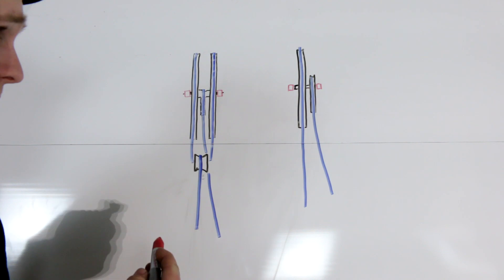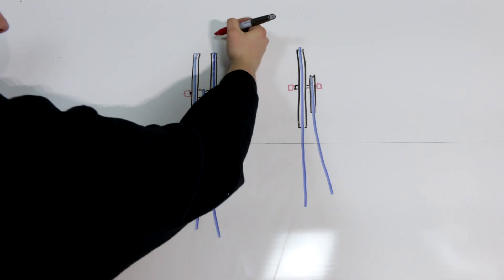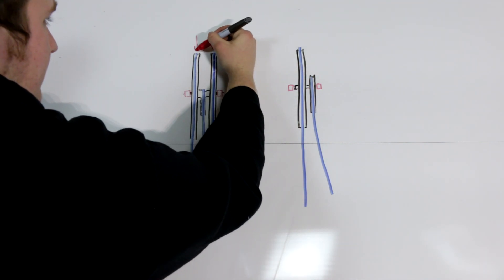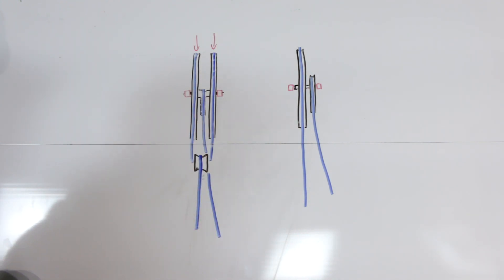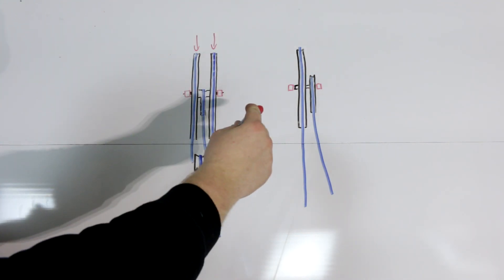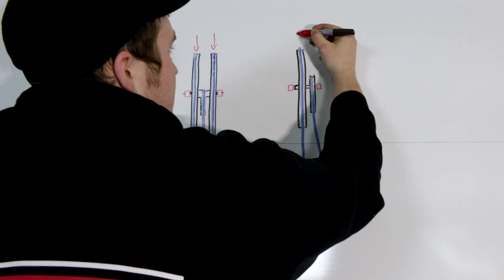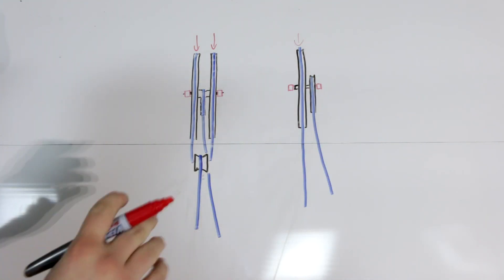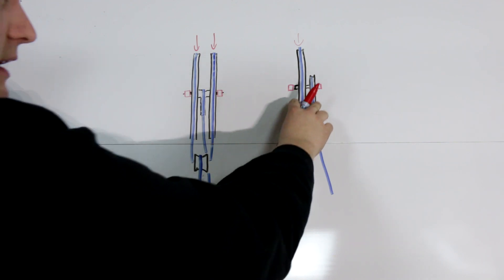So on this Prime system, that force is being pulled right here. These are your two yokes that come off your bow string. On this traditional two-track binary cam system, that's being pulled right here, which is pretty close to the center of the limbs.